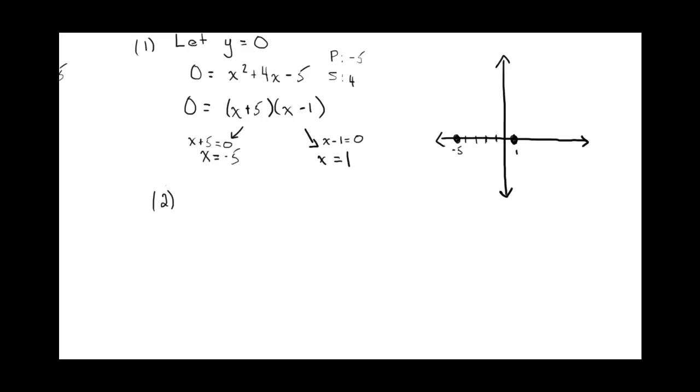And you might be able to see where the vertex would occur. It's got to occur in between the two x-intercepts. So if you remember, we call that the axis of symmetry.